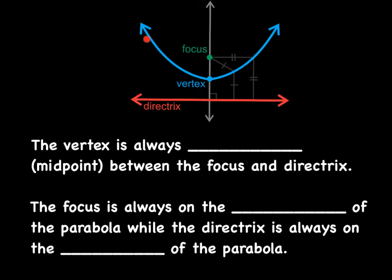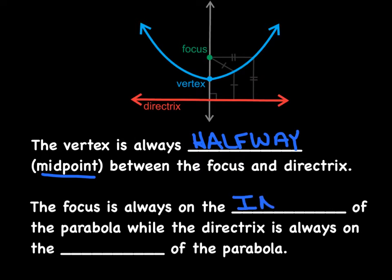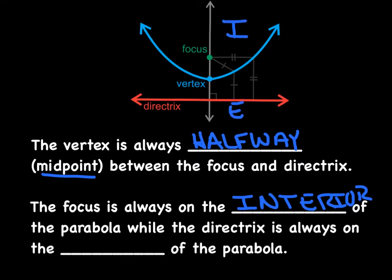Notice how the vertex is right in the middle of the focus and the directrix — the vertex is always halfway between the focus and the directrix, making it the midpoint. The focus is always on the interior of the parabola. With a parabola opening up, anything in the interior space is interior, and anything outside is the exterior. The directrix is always on the exterior of the parabola.